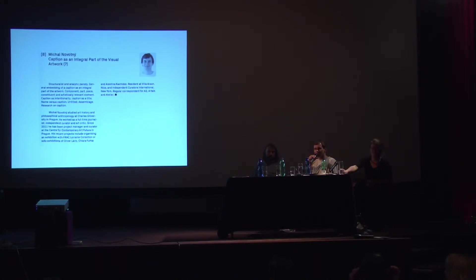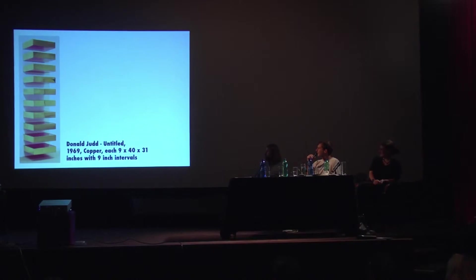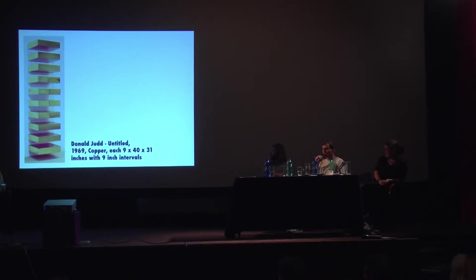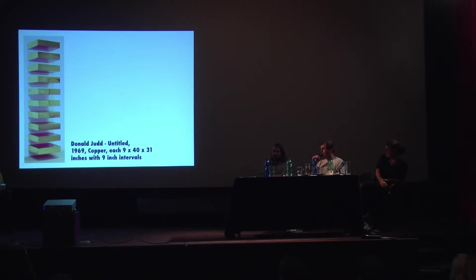What you see here is a caption on the wall — it's quite common — but thanks to our moderator we have also experienced that the caption can actually be spoken. A caption usually consists at least of the name of the artist and the title of the work. Here with Donald Judd we see the title is 'Untitled.' This doesn't mean he forgot to give it a title, but that he intentionally decided to leave it untitled — the English term is nicer than the Czech, German, or French 'without title,' because 'untitled' implies an intentional decision.